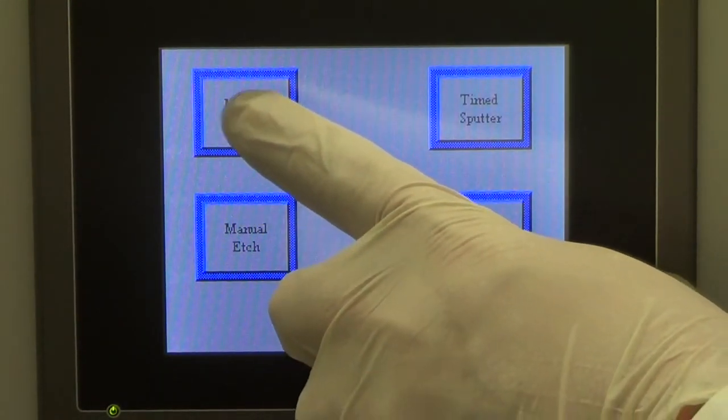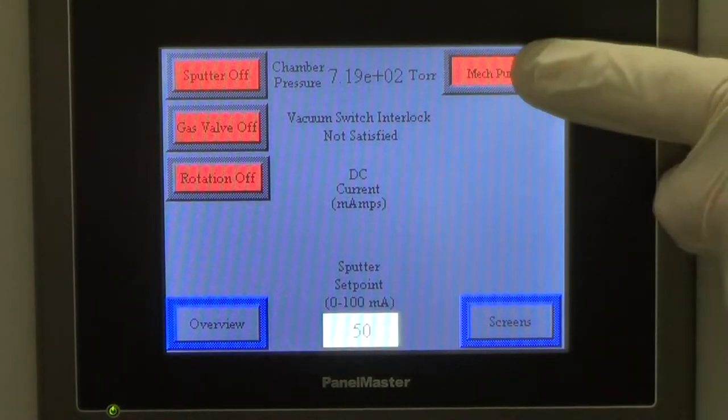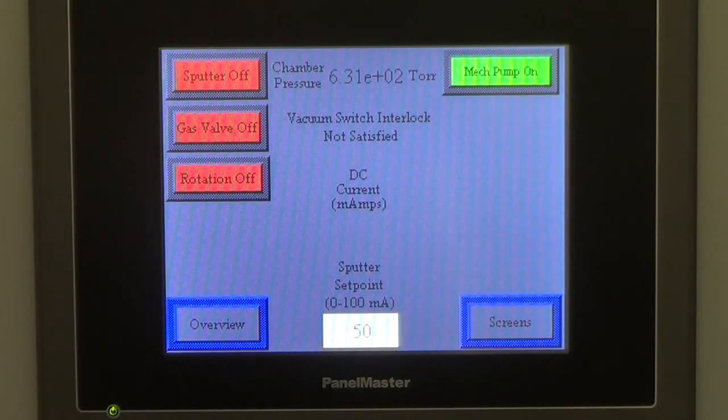Pressing screens takes you to the menu where you can press manual sputter, followed by mechanical pump, which will start the unit pumping down. Pressing mechanical pump again turns off the pump and opens the vent valve.